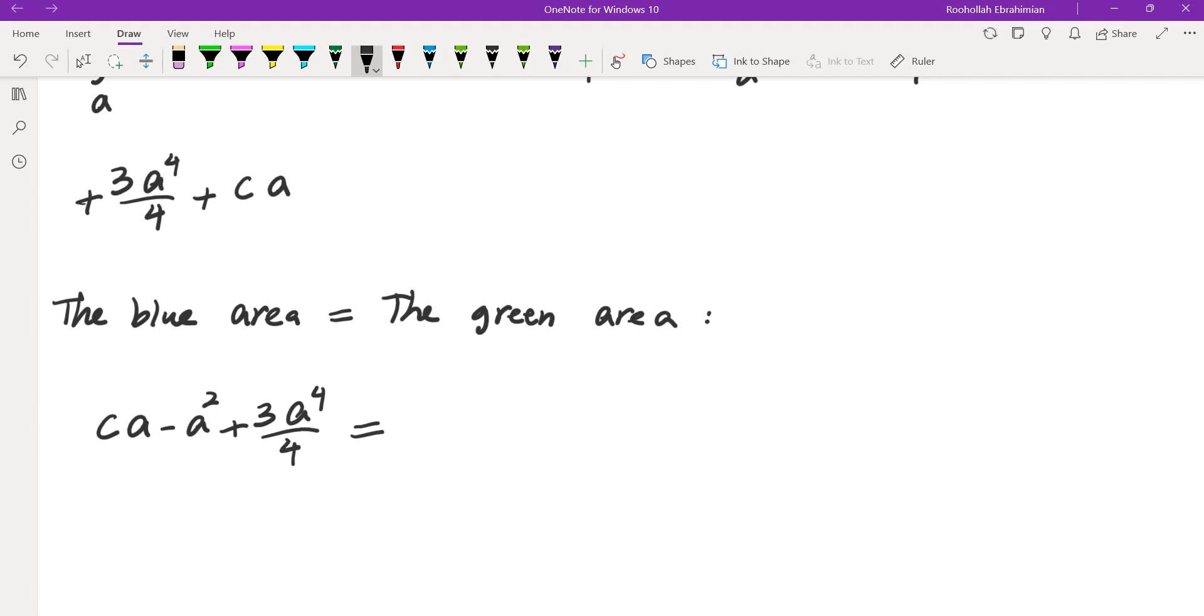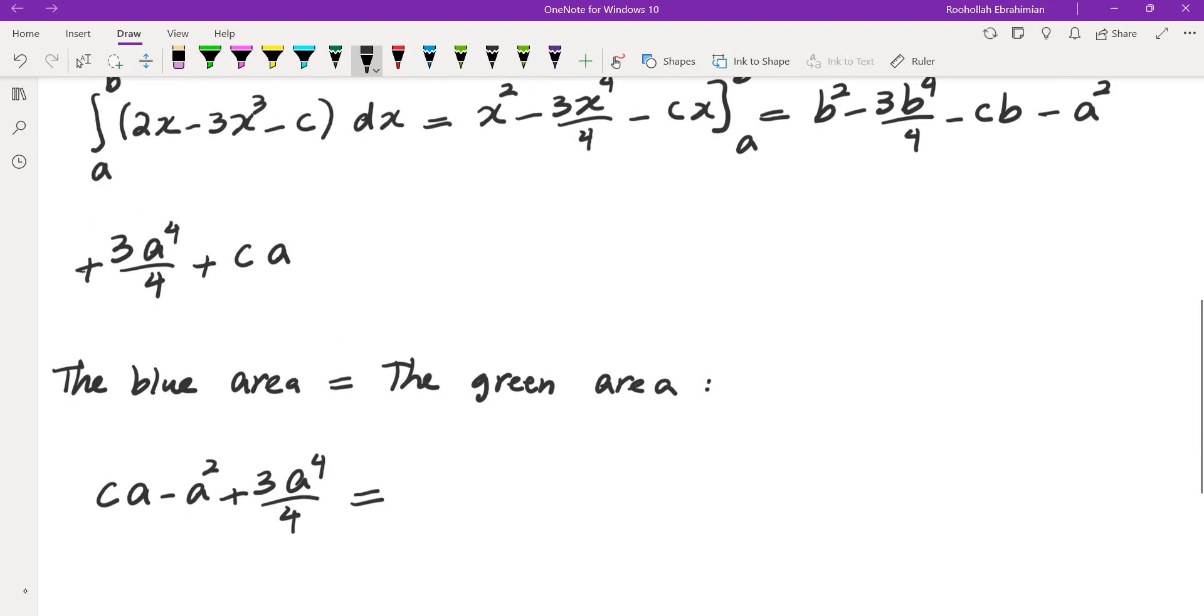If these two are going to be the same, then cA minus a squared plus 3a to the fourth over 4, which was the blue area, must be the same as b squared minus 3b to the fourth over 4 minus cb minus a squared plus 3a to the fourth over 4 plus cA.